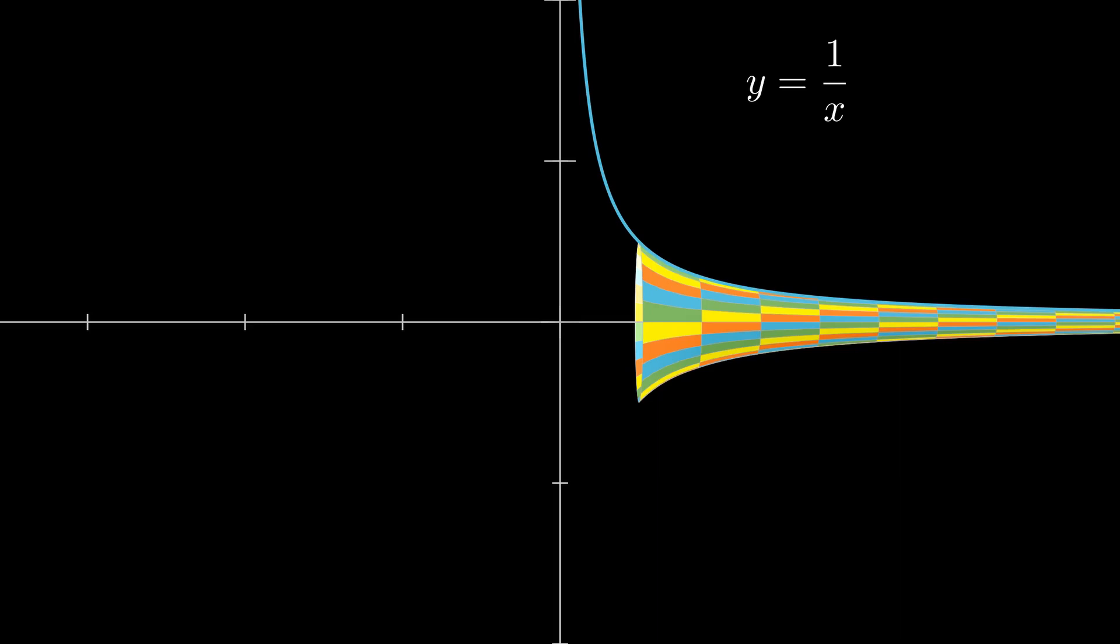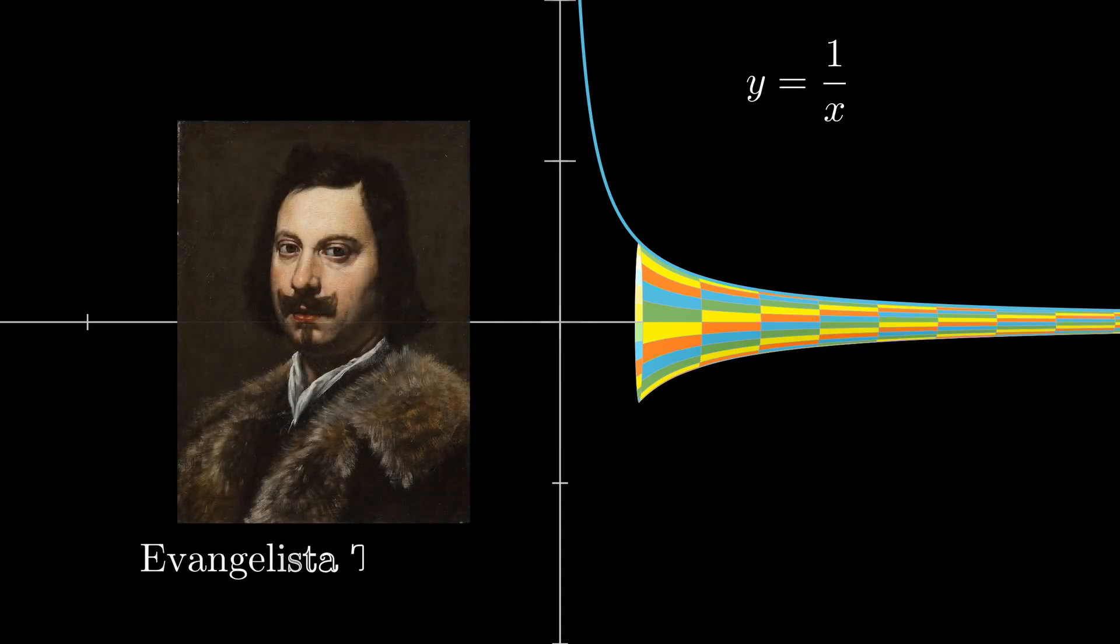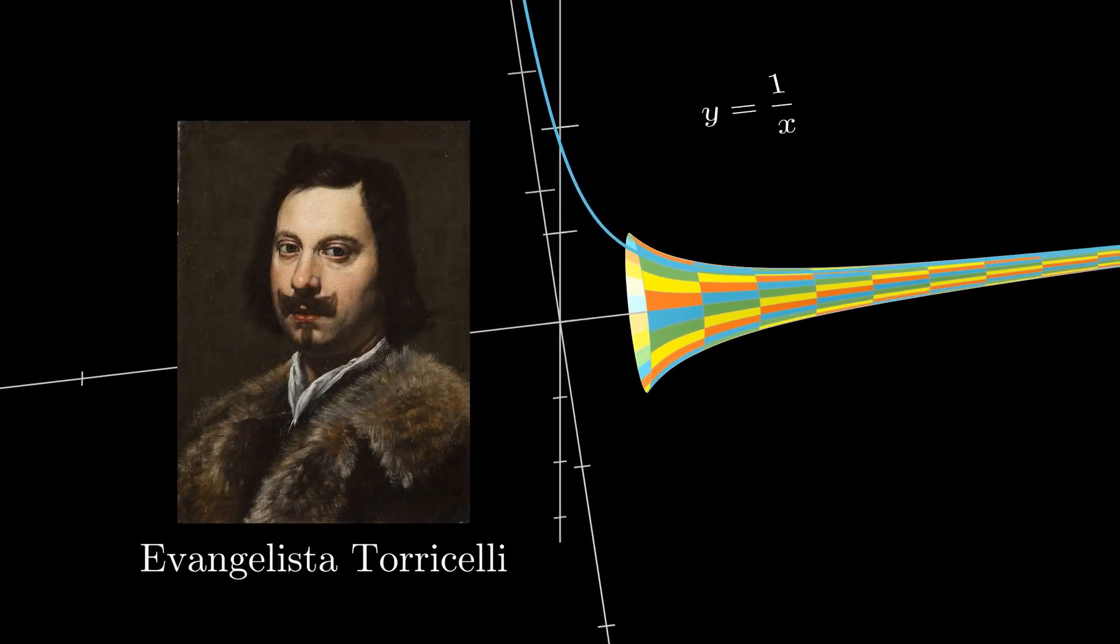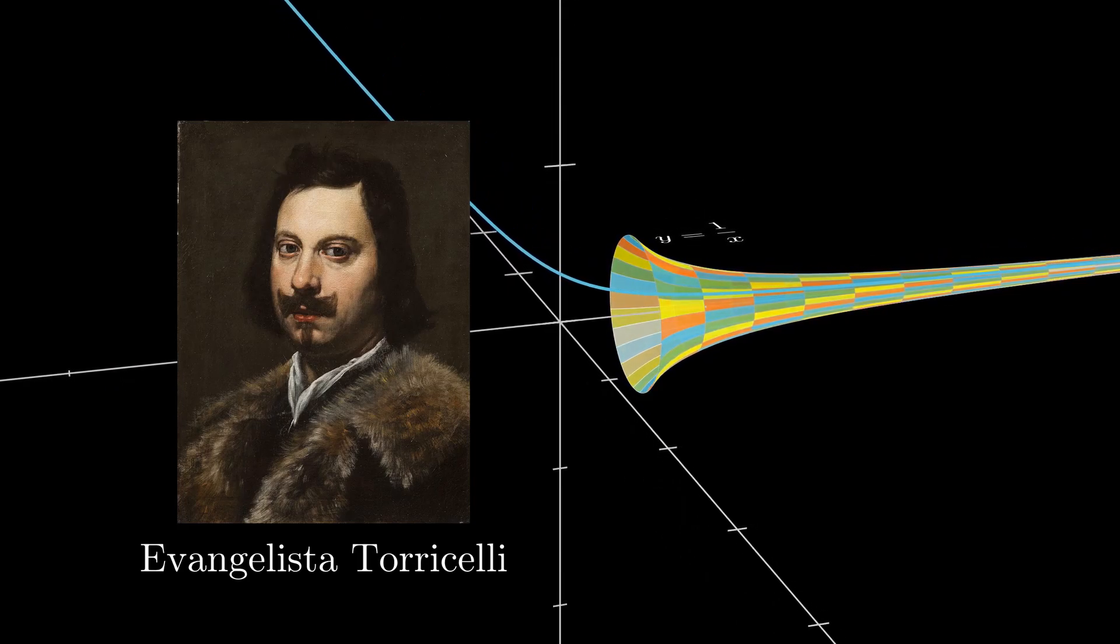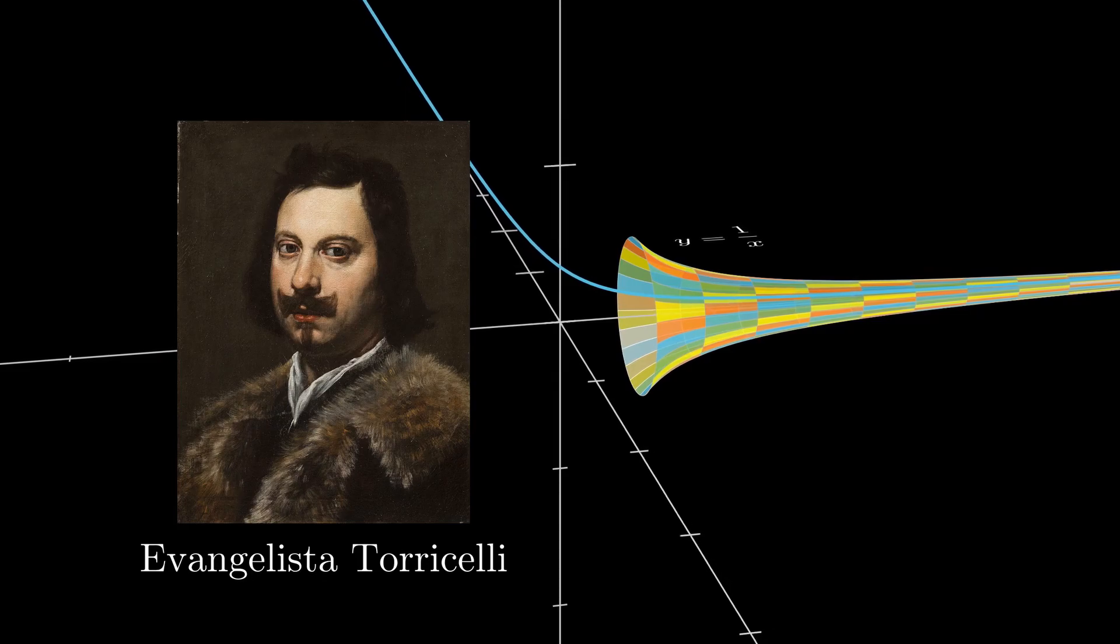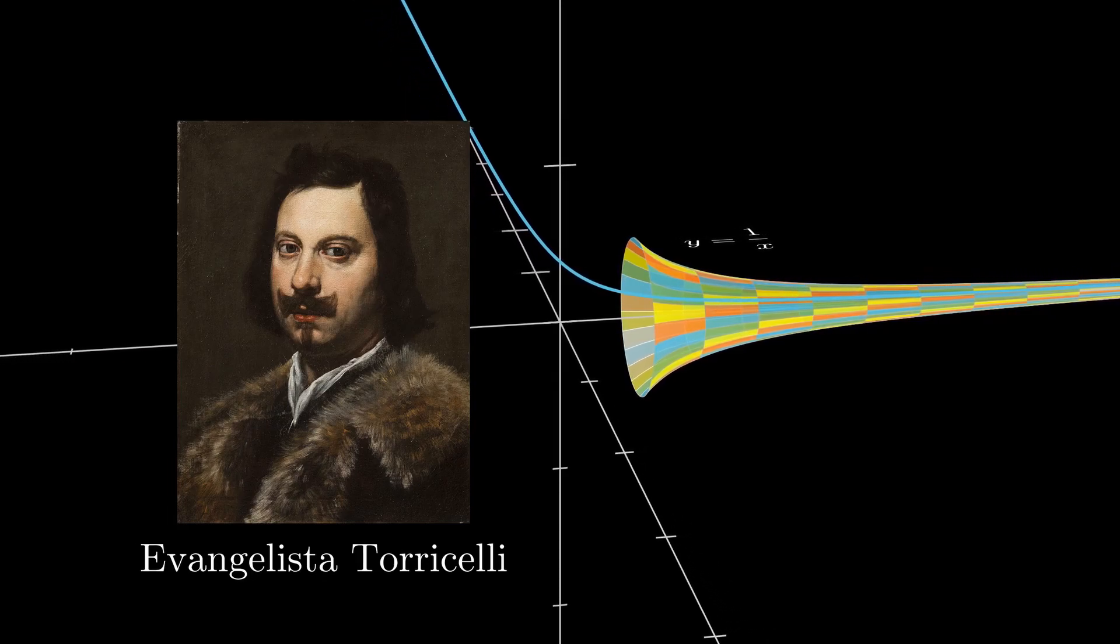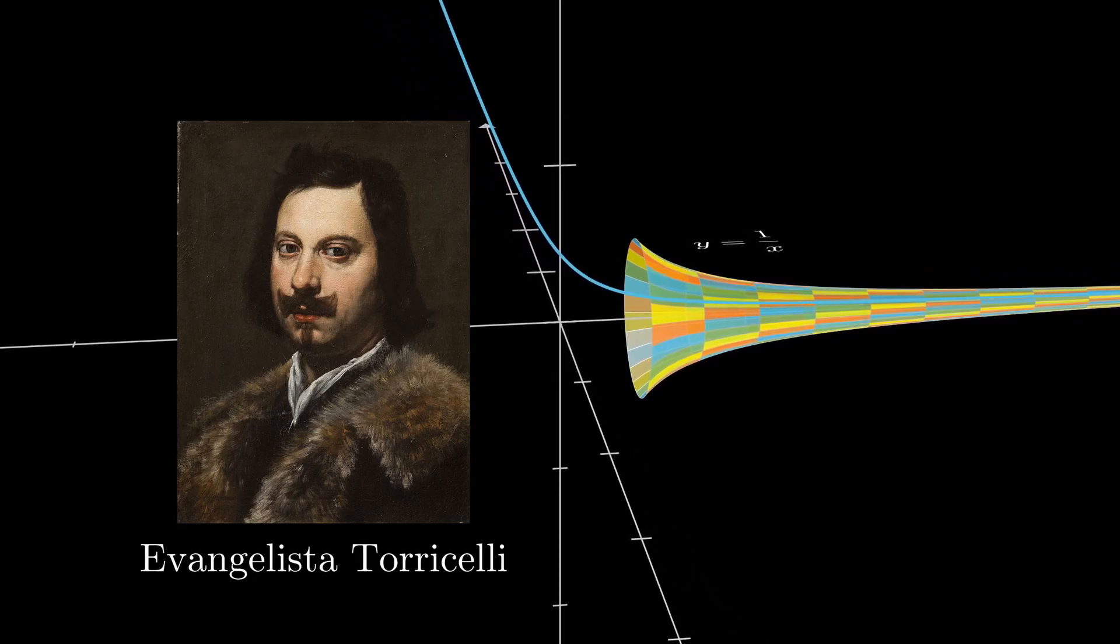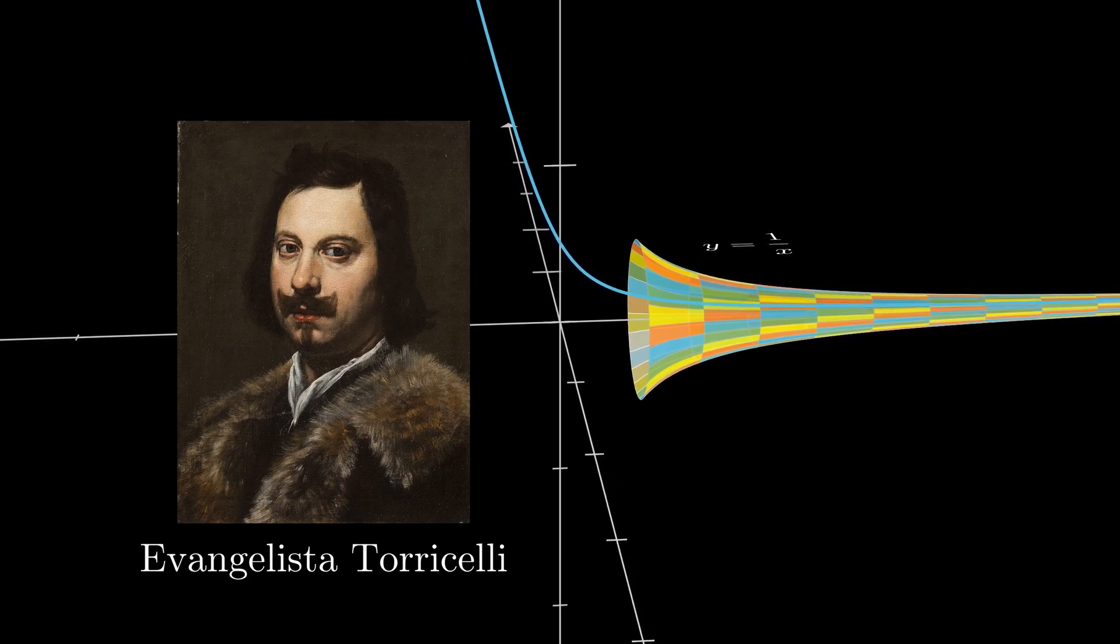The fact that this object has a finite volume was first shown by the Italian mathematician Evangelista Torricelli. Unfortunately his very elegant but simple proof, which was discovered years before the invention of calculus, is little known. And that proof will be the topic of discussion in this video.